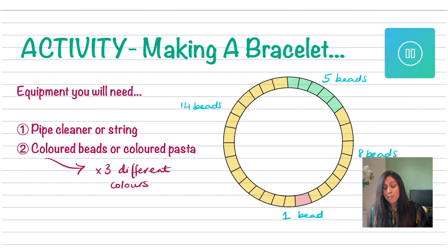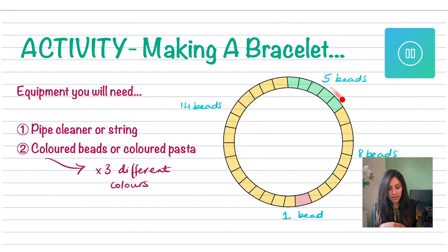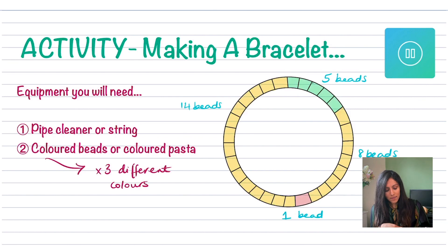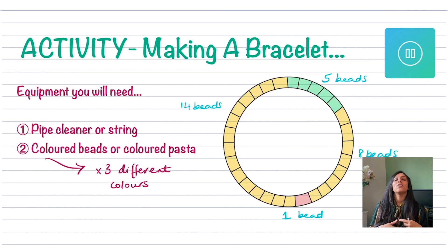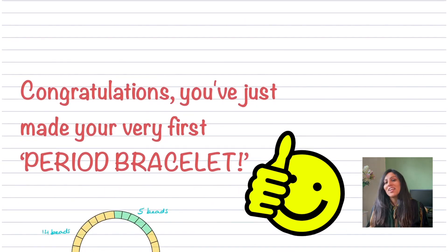Tie your string up and for the first part, choose one colour and put in the first five beads — mine are green. For the second part, take a different colour and add eight beads — mine are yellow. Then choose one really distinct colour, something different — I've chosen red. String in another 14 beads and then tie it up around your wrist or neck. What you've effectively made is your first period bracelet — congratulations! Sounds really gross but there is a method to the madness.